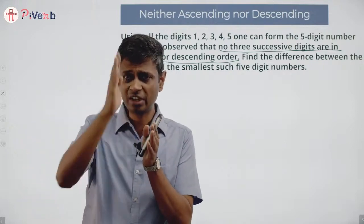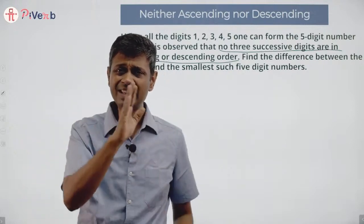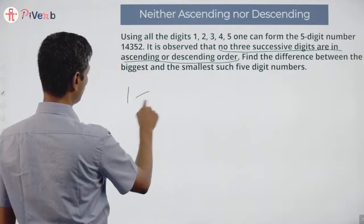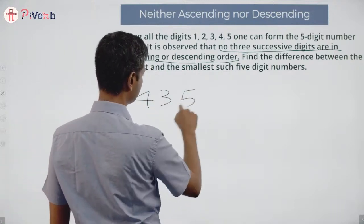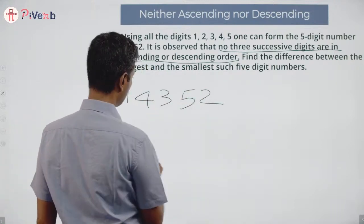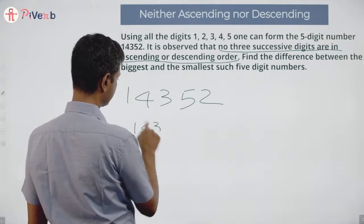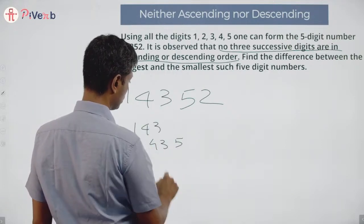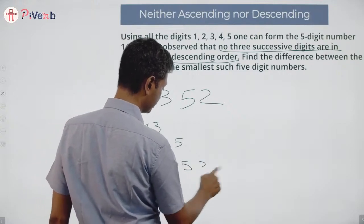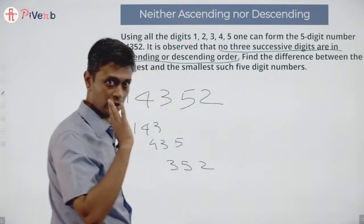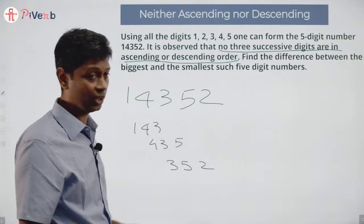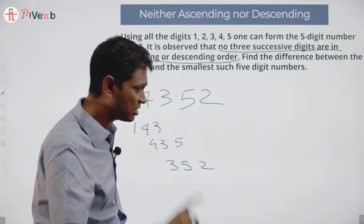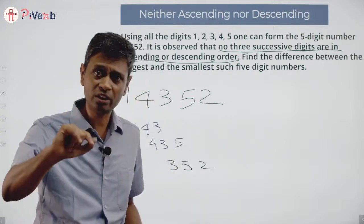Three successive digits means one digit at a time, three in a row. So in the number 14352, we look at 1-4-3, or 4-3-5, or 3-5-2. Take 1-4-3: they are not in ascending order and not in descending order either.